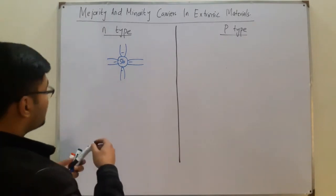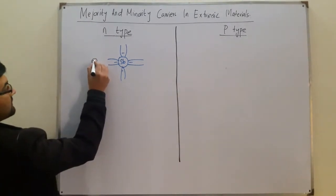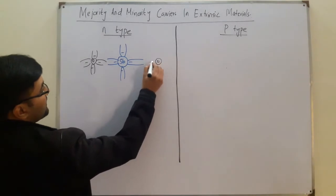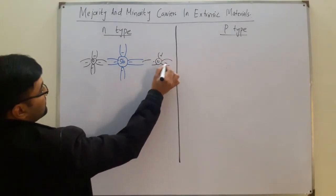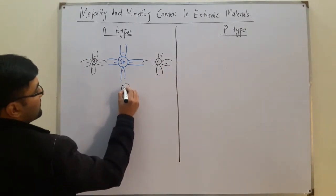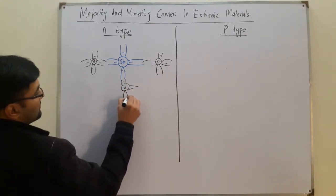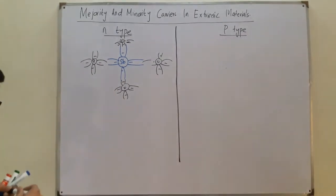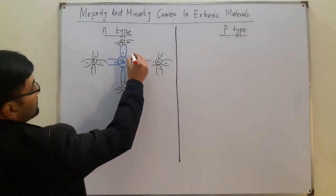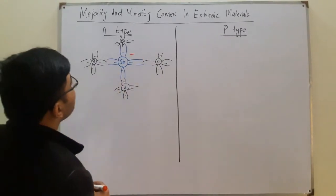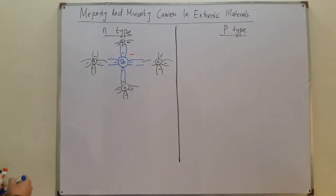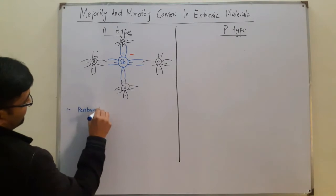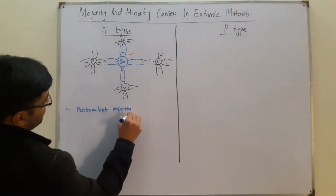We had silicon atoms surrounding it. Silicon was surrounding it from all sides, resulting in four covalent bonds but also an extra electron. So in n-type materials, the first point is that a pentavalent impurity is added.